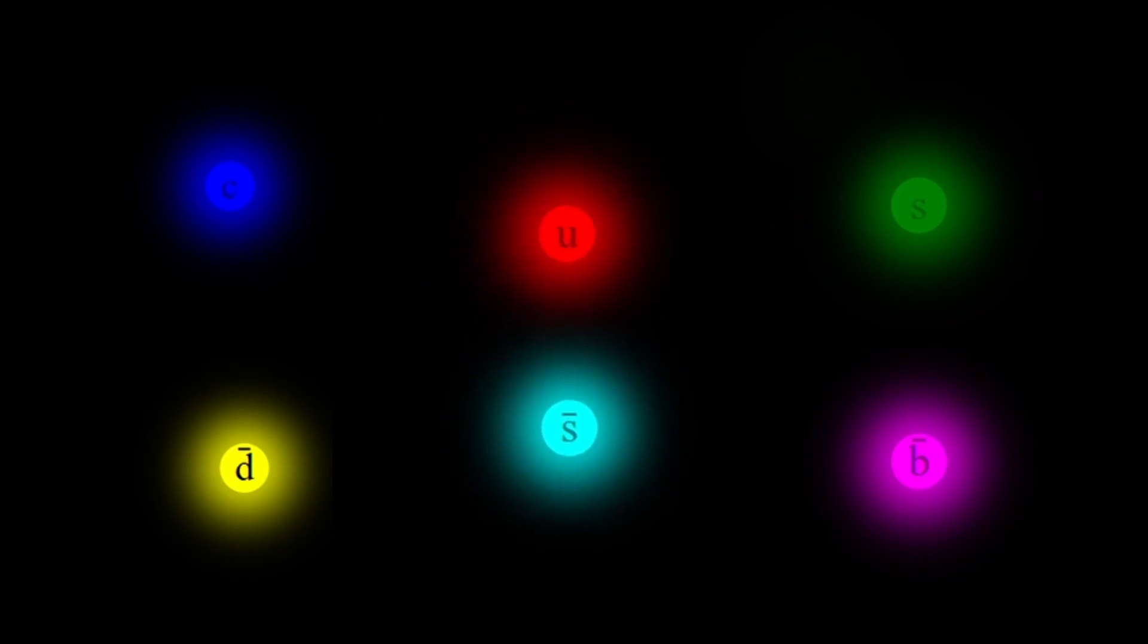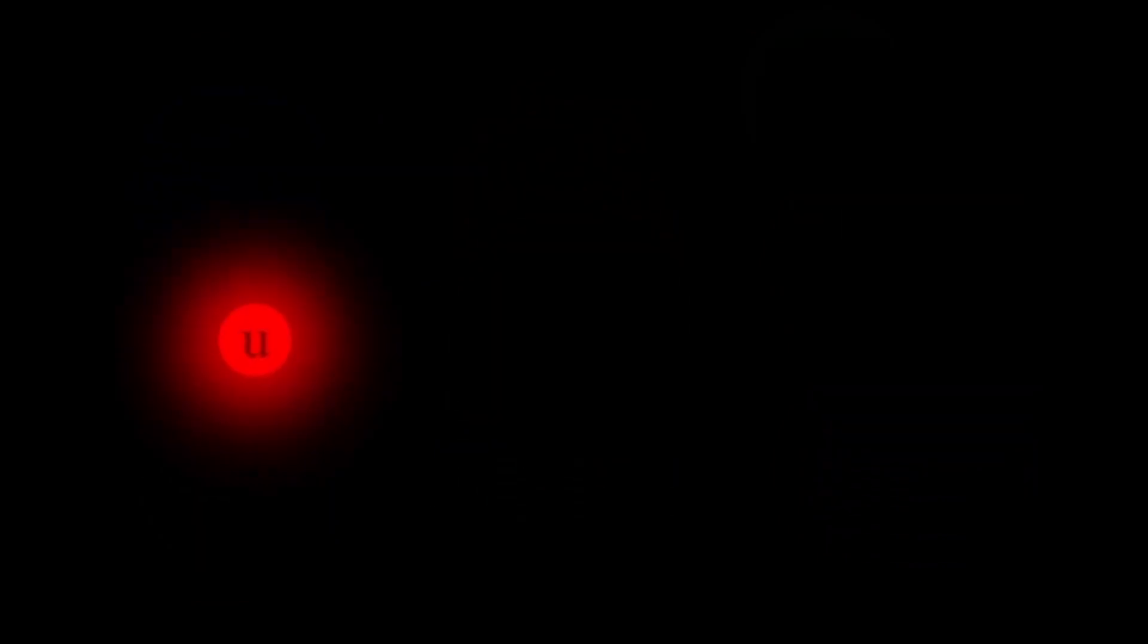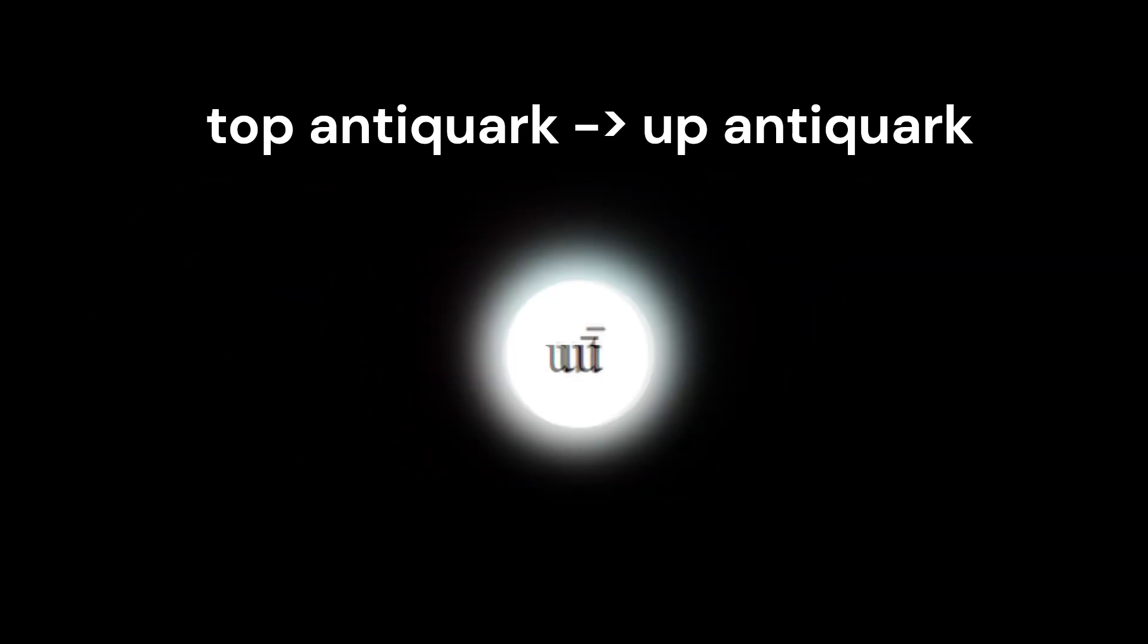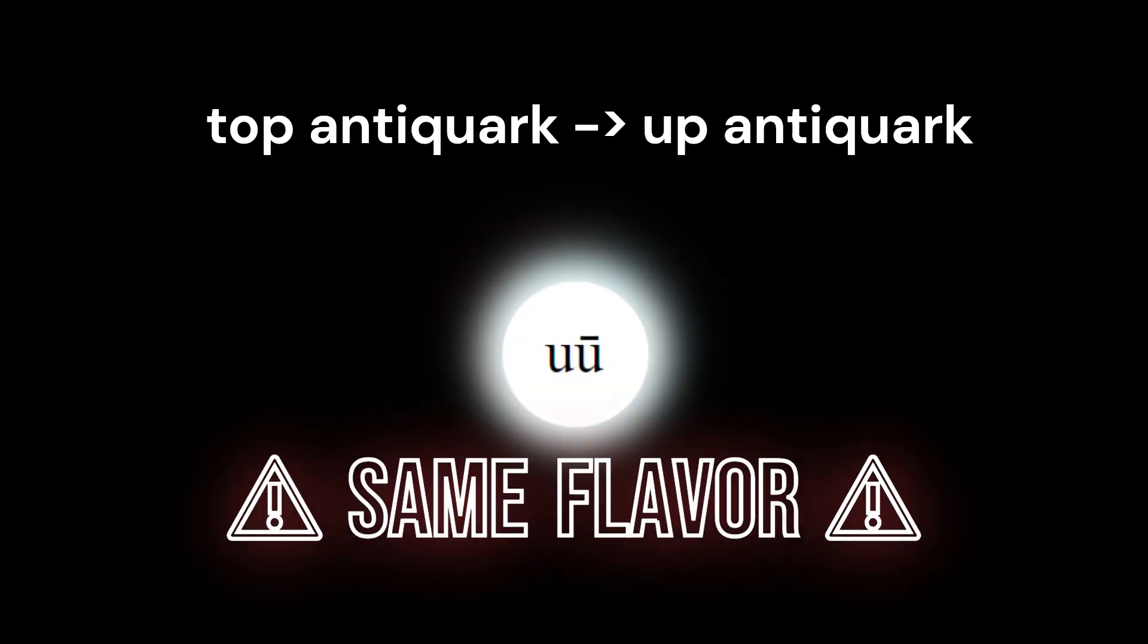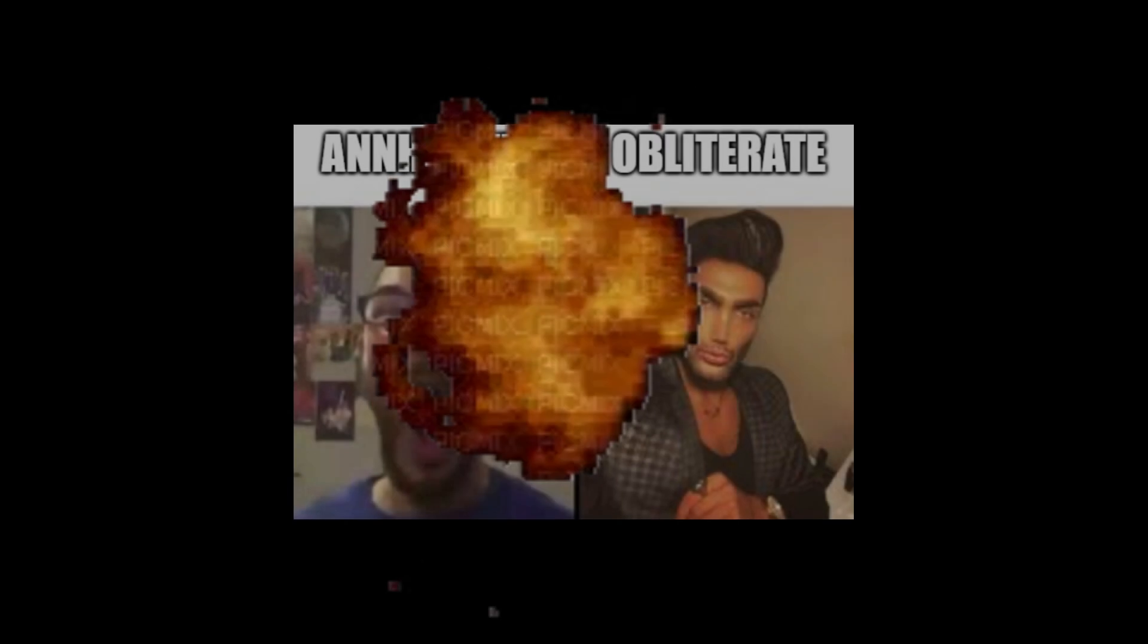This is also why all mesons are unstable. They're made of a quark and an anti-quark, and if either one switches to the same flavor as the other, they'll annihilate and obliterate each other.